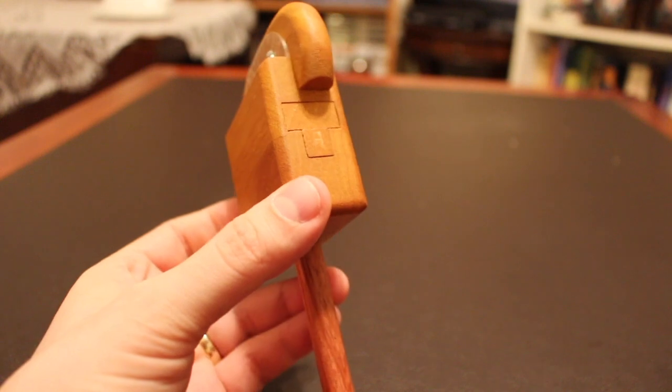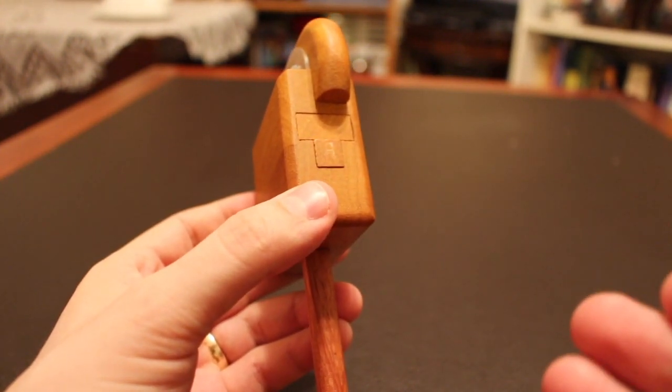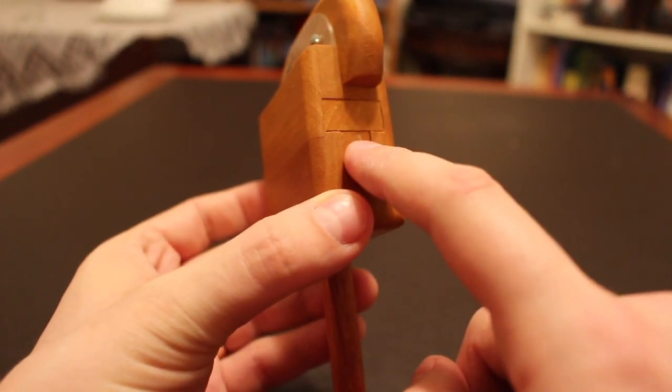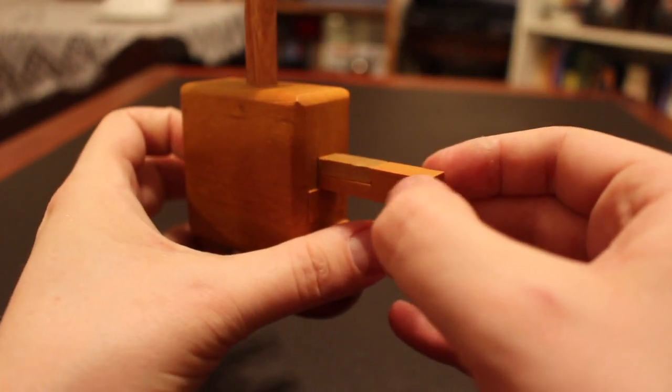As with most sequential discovery puzzles, part of the puzzle is figuring out how the internal mechanics work without ever seeing them. In this case, this piece is stuck here. But if we flip it upside down and tap, we can easily remove it.